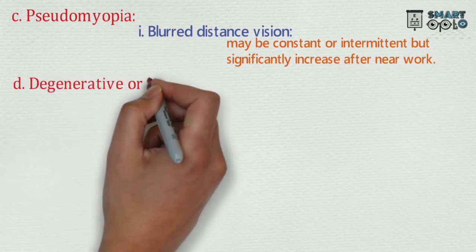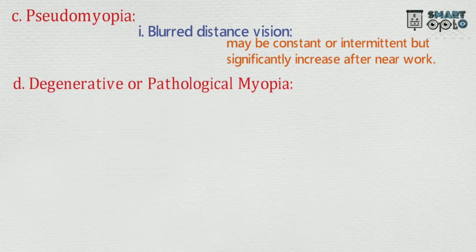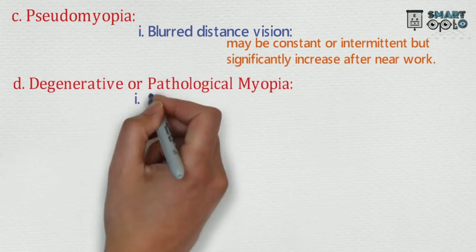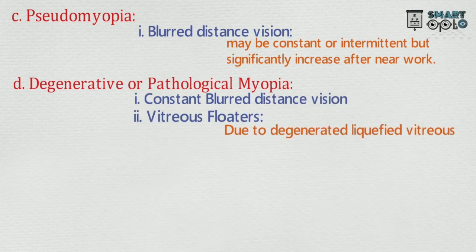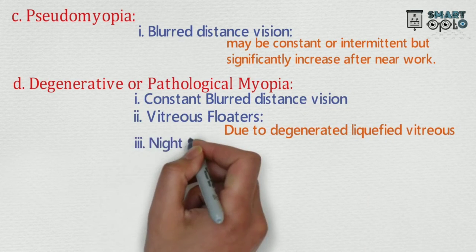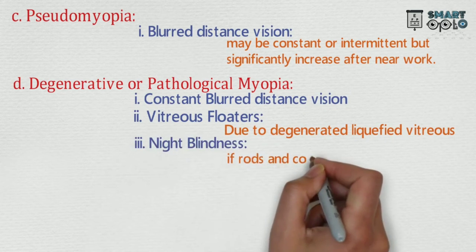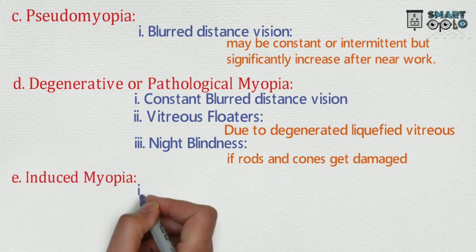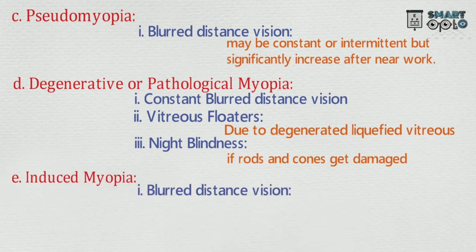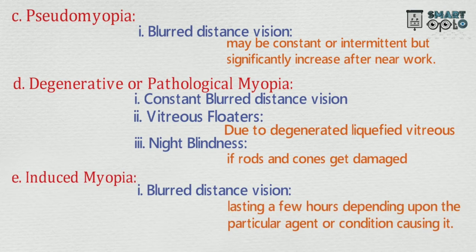D. Degenerative or pathological myopia — symptoms are: 1. Constant blurred distance vision. 2. Vitreous floaters due to degenerated liquefied vitreous. 3. Night blindness if rods and cones are damaged. E. Induced myopia — symptoms are: 1. Blurred distance vision, lasting a few hours depending upon the particular agent or condition causing it.